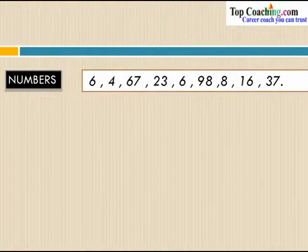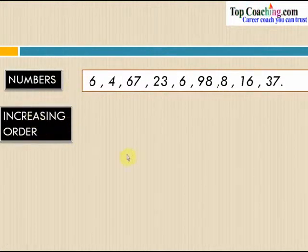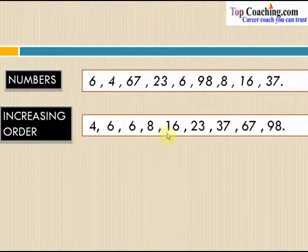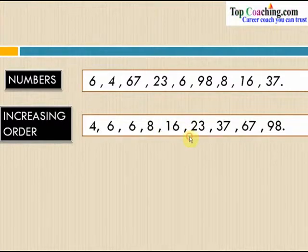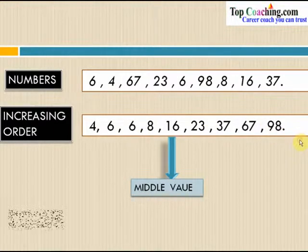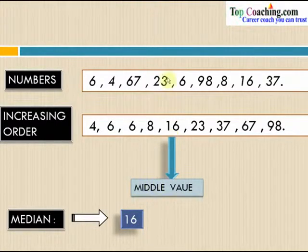Let us say we have the numbers 6, 4, 67, 23, 6, 98, 8, 16 and 37. If we arrange all these numbers in increasing order, we get 4, 6, 6, 8, 16, 23, 37, 67 and 98. There are 9 entries, so the middle value is the 5th element, which is 16. So 16 represents the middle value, and the median of this particular data is 16 — the middle value when arranged in increasing order.